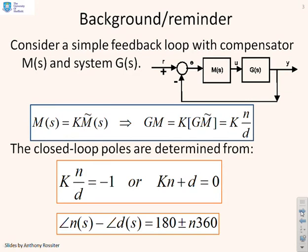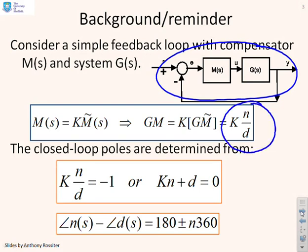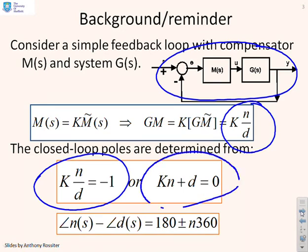As background, we're using simple feedback loops expressing G and M in the form KN over D, separating the dynamic part from the scalar gain K. The closed-loop poles are defined from either of those two relationships, and this video will give a number of examples.